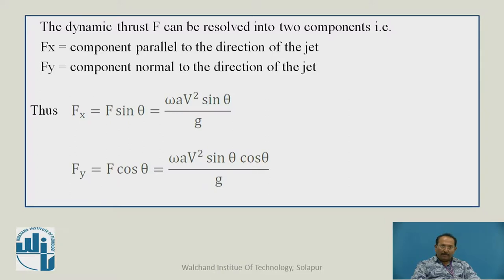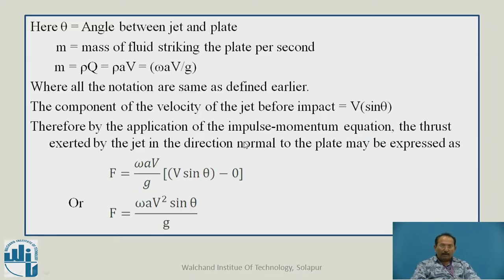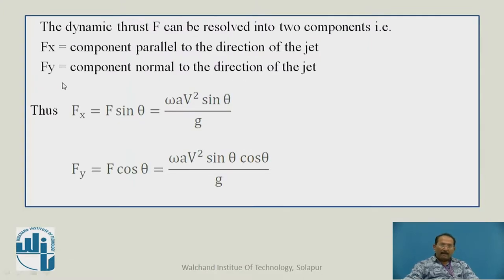But we have to calculate Fx and Fy, as these are the two different components. The dynamic thrust F is resolved into two components: Fx, which is parallel to the direction of the jet, and Fy, normal to the direction of jet. When it is parallel, it is F sin theta, that is ωAV² sin²theta upon g. When it is normal to the direction of jet, it is F cos theta, which is ωAV² sin theta cos theta upon g.